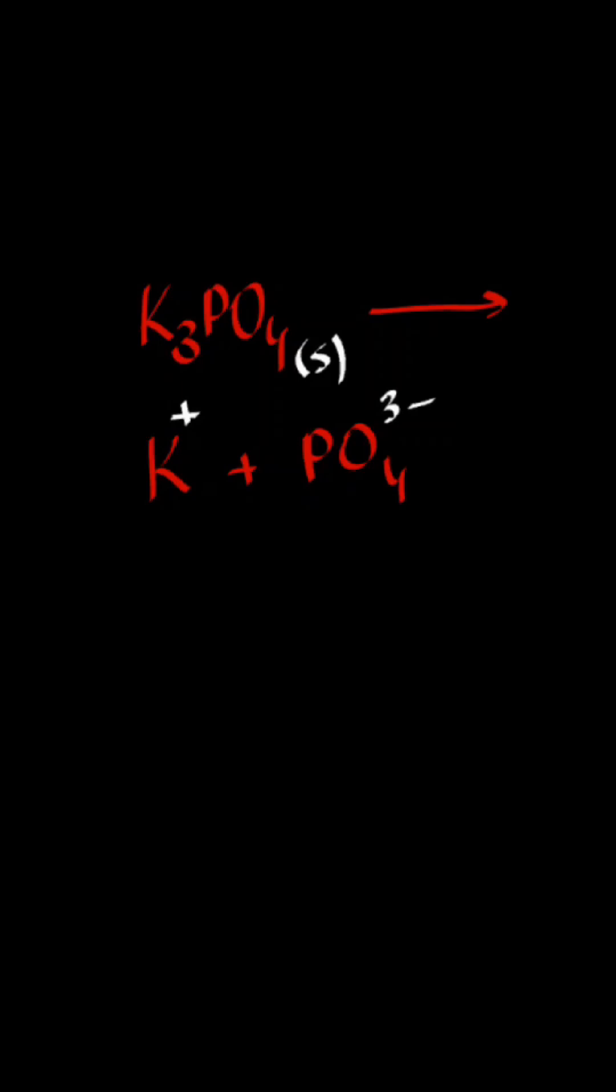Lastly, just balance the reaction. Before the reaction, we have three potassium ions, and after the reaction, only one. So we write 3 in front of the K+ ion.